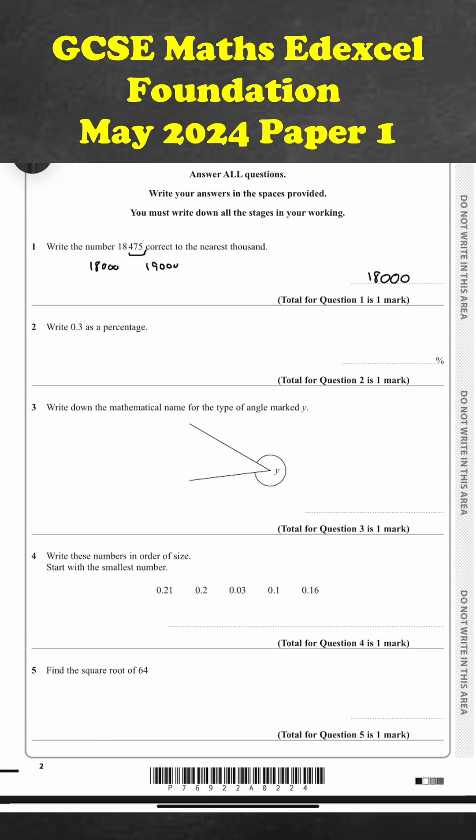Question two. Write 0.3 as a percentage. 0.3 is the same as 3 out of 10, which is the same as 30 out of 100, which is the same as 30%.